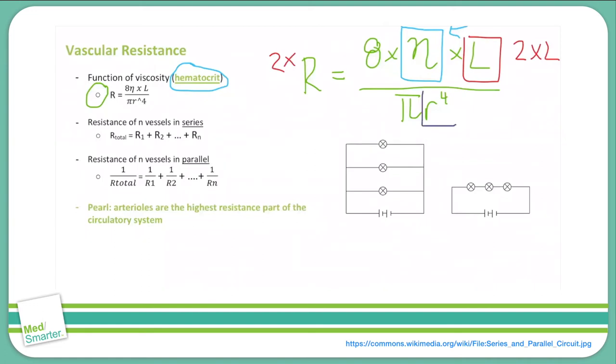And then we've got the radius. You'll notice that the radius here is to the fourth power, so what happens if we double the radius? Our resistance now becomes one sixteenth of what it was before. So one thing you should be aware of is that the radius has more effect on the resistance than either the viscosity or the length of the blood vessel.